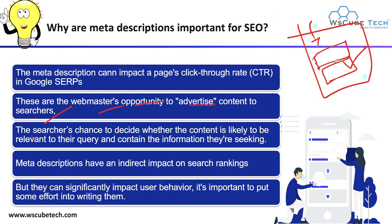Searchers can look at this content and decide whether the information is relevant to their search query and contains what they are seeking. Meta description has an indirect impact on search ranking — not a direct impact, but indirectly it is helpful because it significantly impacts user behavior. That's why we consider meta description one of the important factors of on-page SEO, and you must optimize your meta description along with your title optimization.